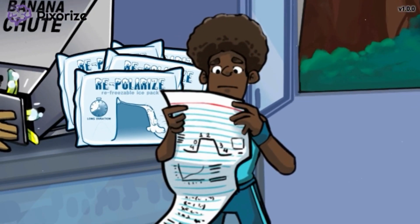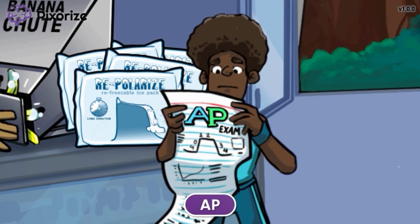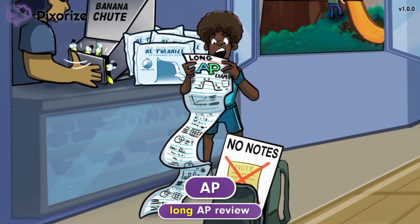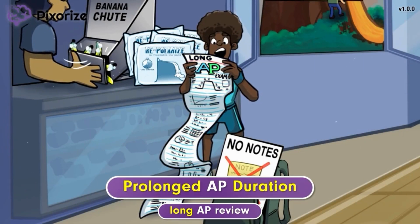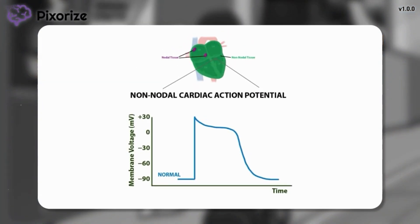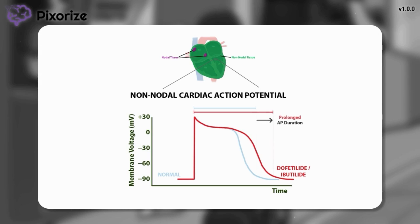Let's return to the basketball player studying for his upcoming exam. The boy is reviewing for an AP exam — our recurring symbol for the action potential. Because his AP review is super long, he even needs to study during basketball practice. This long AP review helps you remember that Dofetilide and Ibutilide can prolong the AP duration. On our diagram, we've shown how long an action potential normally lasts — the AP duration. Dofetilide and Ibutilide prolong repolarization, which also prolongs the AP duration. A prolonged AP duration, markedly prolonged repolarization, and an increased ERP length are all interconnected consequences of blocking potassium channels.